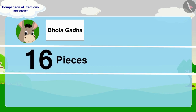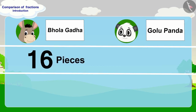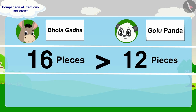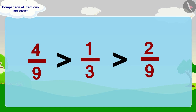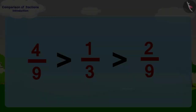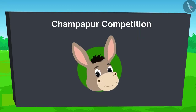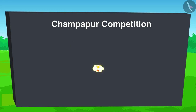Bhoala has written his name on sixteen pieces of paper and Golu has written his name on twelve pieces of paper. Therefore, Bhoala has written his name on more pieces of paper than Golu. We can also see it this way: the fraction four ninths is larger than one third. We can also write the fractions for the number of pieces written on by Bhoala, Shere Khan and Golu in this way. After all, Bhoala won the competition by writing his name on the most pieces of paper.